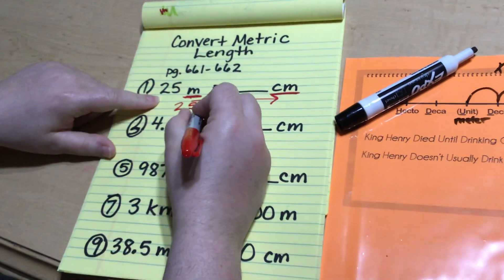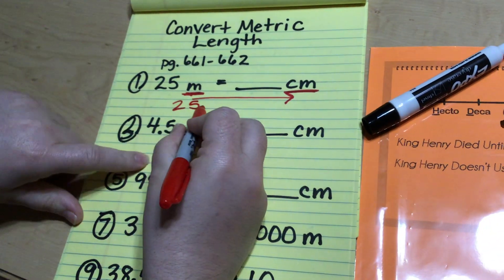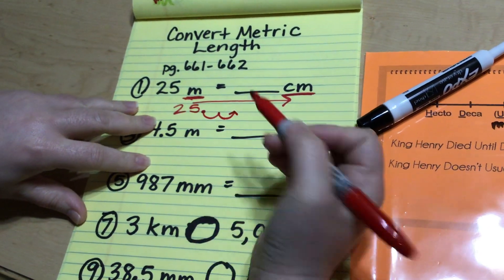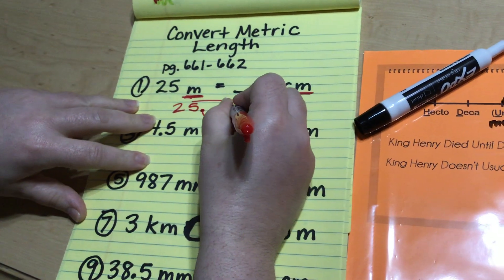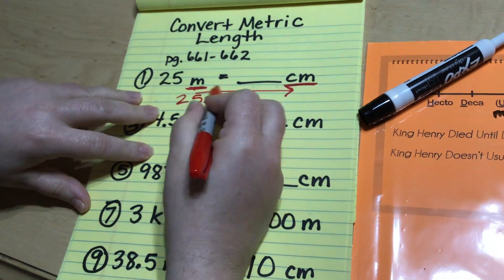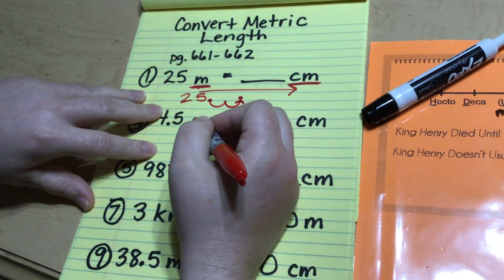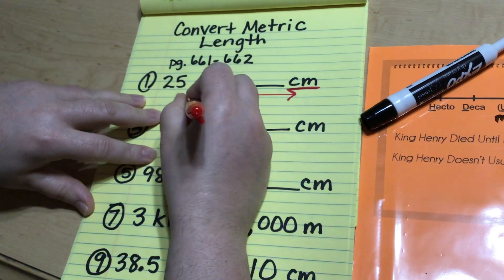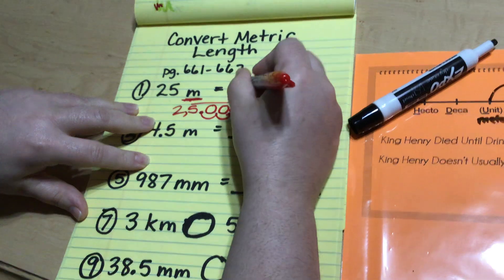Now look at your problem. You take the number you have and you're gonna take wherever the decimal would be, right behind the five, and you're gonna make one jump, two jumps to the right. That's where my decimal point is now. But Ms. Hubble what do we do with all those empty spaces? You just put in a zero. It's 2,500 centimeters.